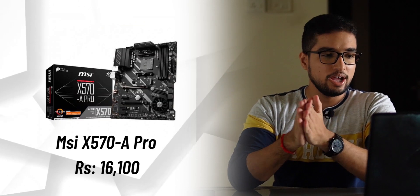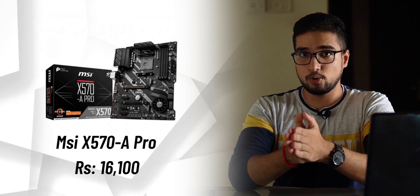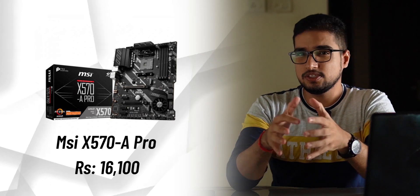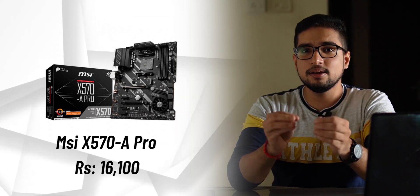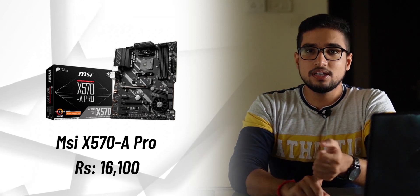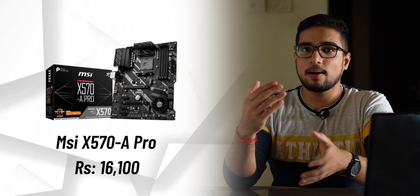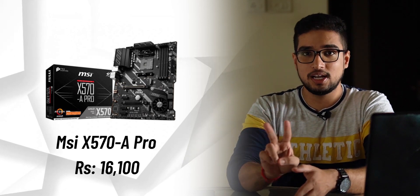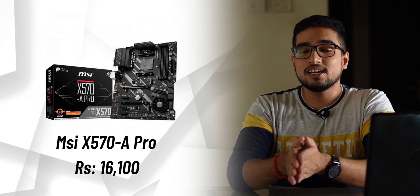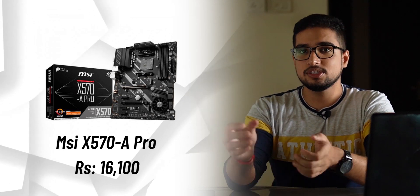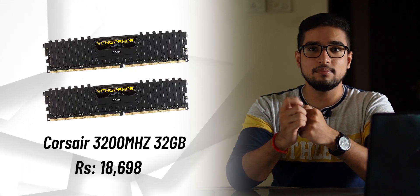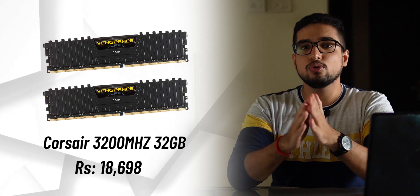Now we are going to the motherboard. The one we are going to use here is the MSI X570 A Pro. This motherboard's price is around 16,100 rupees. It is a bit expensive, but I chose it because it makes you future-proof. This motherboard is special because if you want more rendering power, you can add two GPUs. So next time when you upgrade, you don't have to upgrade the motherboard — you just add a GPU. For RAM, we will use Corsair 16GB sticks at 3200MHz for a total of 32GB.